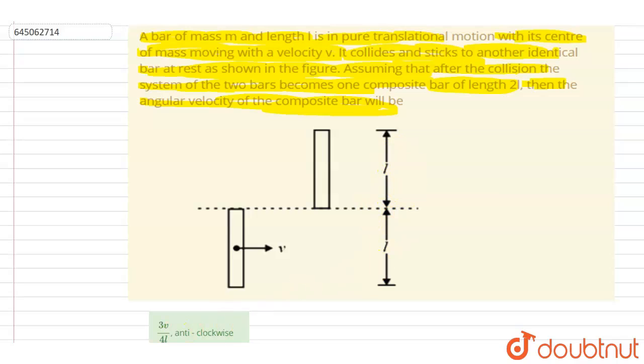If you see here, the composite bar will have a total length of 2l, and it is said that after the collision they stick together and form one composite bar. So if I conserve the angular momentum about this point where they collide, there will not be any external torque.